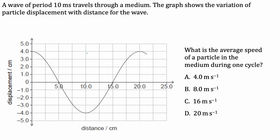So here's the problem. We've got a wave with a time period of 10 milliseconds and the behavior of a particle on that wave is shown in the graph. We have displacement on the y-axis and on the x-axis we've got the distance along the wave to about 20 centimetres.